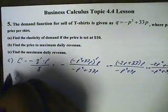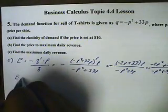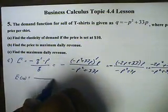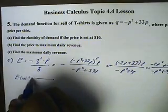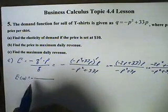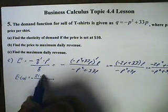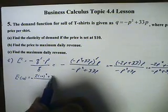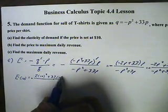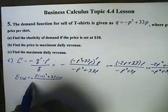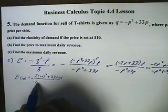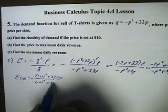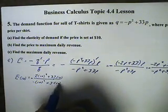Now, everywhere we see a P, we're going to put 10 in. So this will be negative, and 2 times 10 squared plus 33 times 10, all over negative 10 squared plus 33 times 10.